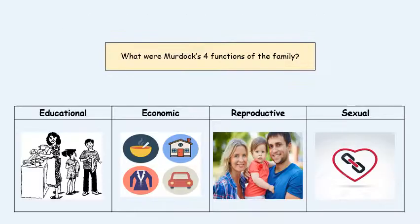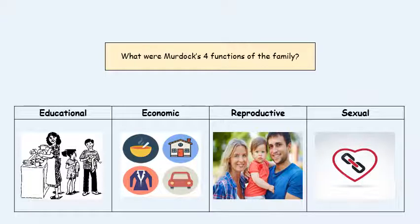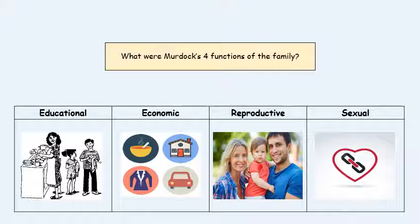According to Murdoch, the four functions of the nuclear family following the EARS acronym are: Educational, Economic, Reproductive, and Sexual. The educational function is about socialisation — the family bringing children up with the norms and values of society and making sure that children are successful members of society.